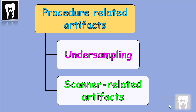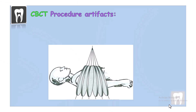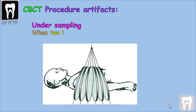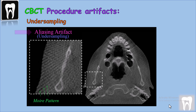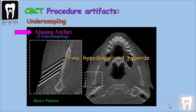Procedure-related artifacts include undersampling artifacts and scanner-related artifacts. Undersampling artifact occurs when there are large intervals between projections, which can cause misregistration of data at sharp edges — the resulting view is called an aliasing artifact. Fine strips appear to radiate from the edges of dense structures like the skull bone, particularly at the periphery, appearing as hypodense and hyperdense fine strips radiating from the edges of bone. This can also be called the Moiré pattern.